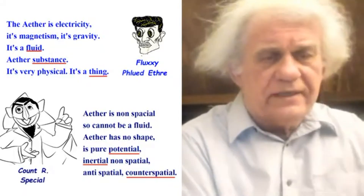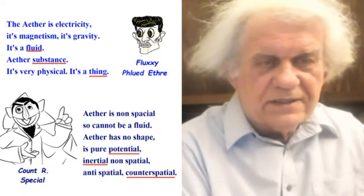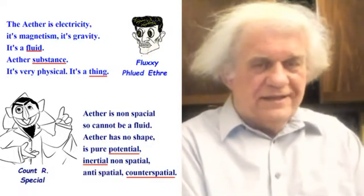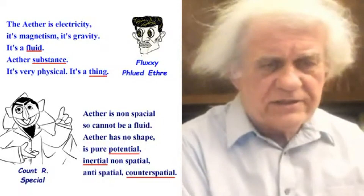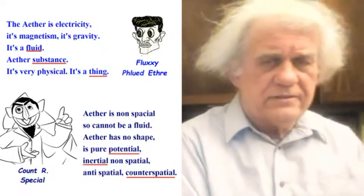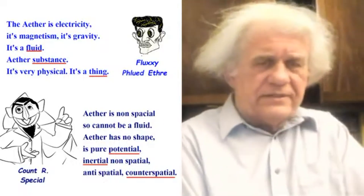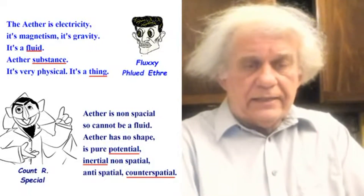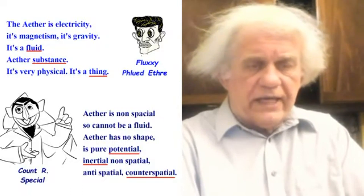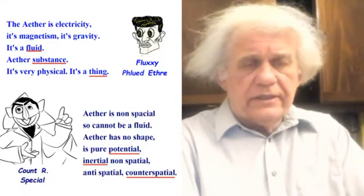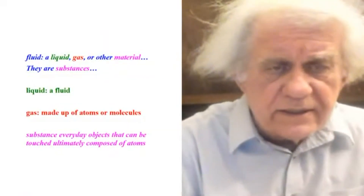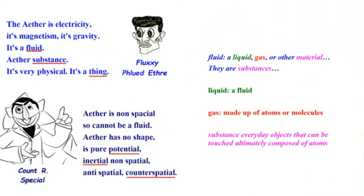The second fellow says ether is non-spatial, so it cannot be a fluid. Ether has no shape — it's not physical, not a thing, because it has no shape. It's pure potential, inertial, non-spatial, anti-spatial, counter-spatial. So we have 'counter-spatial' versus 'fluid' — that's what these two are arguing about, and it's very hard to follow. I challenged the first fellow: what is a fluid? A fluid, if you look it up, is a liquid, gas, or other material.